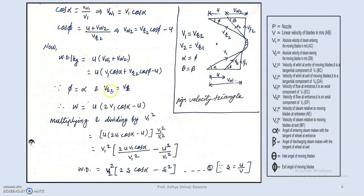Substituting into work done: W = u × (v1 cos alpha + vr2 cos phi − u). For Parsons reaction turbine, phi equals alpha and vr2 equals v1, so v1 cos alpha and v1 cos phi both equal v1 cos alpha. To express in terms of blade speed ratio, we divide and multiply by v1 squared. Letting s = u/v1, work done becomes v1 squared times (2s cos alpha − s squared).